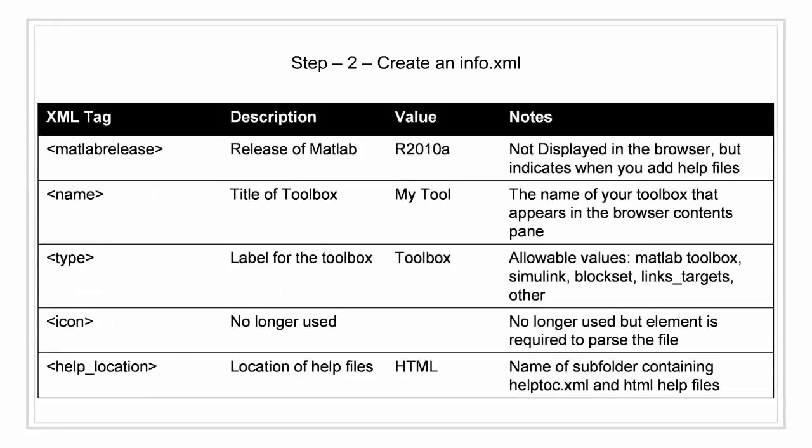Let's talk about the XML tags in the info.xml file. The matlabrelease tag indicates the release for which the toolbox documentation is written. The name tag indicates the title or name of the toolbox, and this name appears as-is in the browser contents pane. The type tag is a label describing whether the toolbox is for MATLAB, Simulink, a block set, or others such as links and targets. The icon tag is no longer actively used but is required for the file to parse correctly.